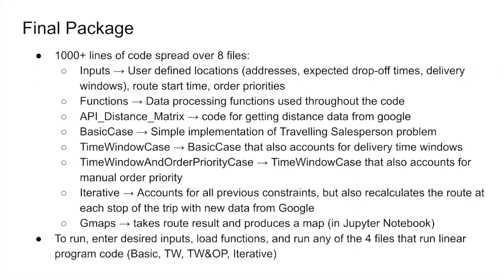Our package contains eight files. Four can be run to produce a route: the base case file, the time window case, the time window and order priority case, and the iterative case — which accounts for all functions and recalculates the route after each delivery based on traffic changes. The other four files provide shared functions used by all four runnable cases and are not run directly by the user.